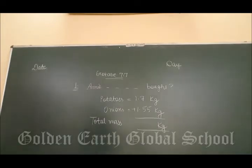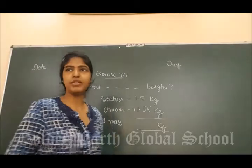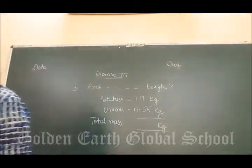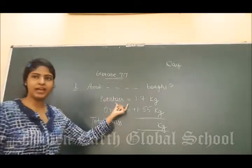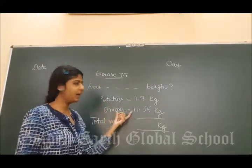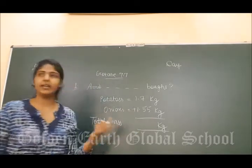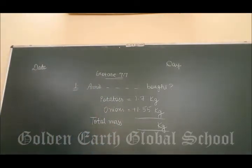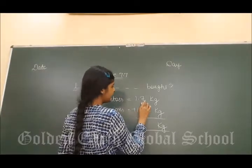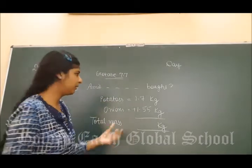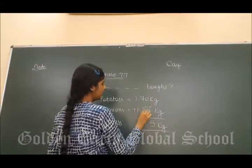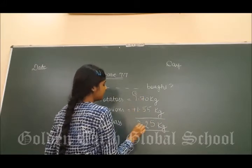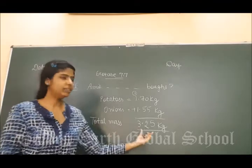Now, exercise 7.7, story sums. First question is: Amit bought 1.7 kg of potatoes and 1.55 kg of onions. What is the total mass of vegetables he bought? 0 here, 0 plus 5 is 5, 7 plus 5 is 12, 1 plus 1 is 2, 2 plus 1 is 3. So, the total mass of vegetables is 3.25 kg.